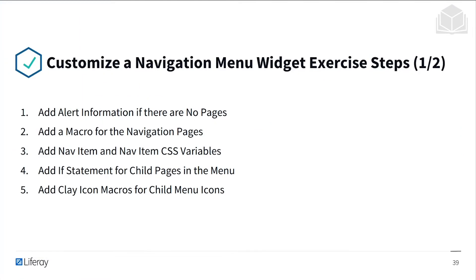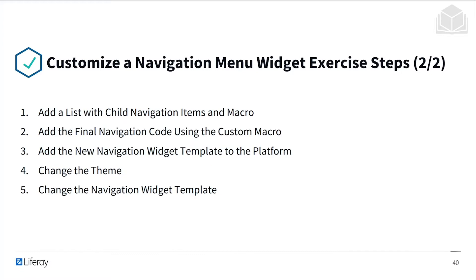Here are the steps we'll be taking in today's exercise. First, we'll add alert information if there are no pages. Then we'll add a macro for the navigation pages, add a nav item and the nav item CSS variables, add an if statement for child pages in the menu, add clay icon macros for child menu icons, add a list with child navigation items and macro, as well as the final navigation code using the custom macro. Then we'll add the new navigation widget template to the platform, change the theme, and change the navigation widget template.